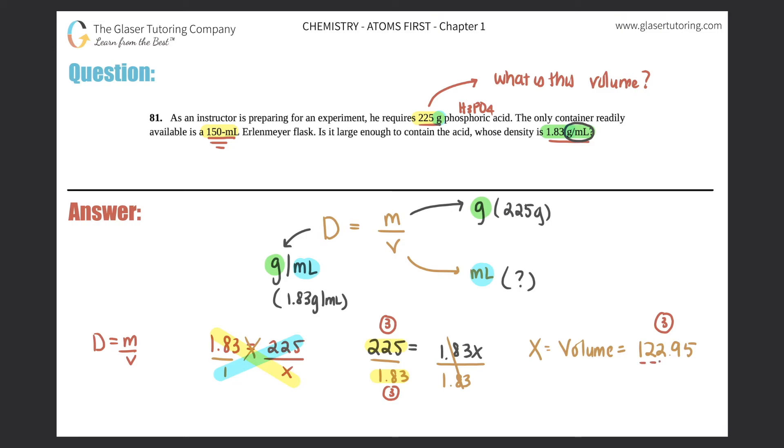So the 1, 2, and the 2 count, but the 9 tells me that this 2 needs to round up to a 3. So the volume required for this 225 gram sample is 123 milliliters. And I say milliliters because this was in milliliters, so the unit will come out the same.